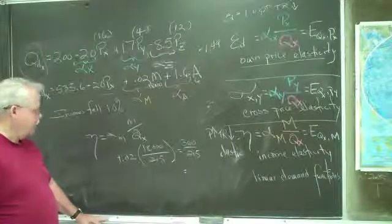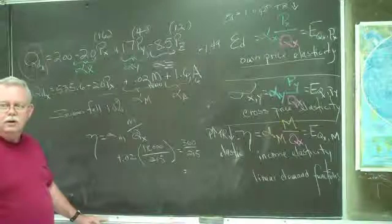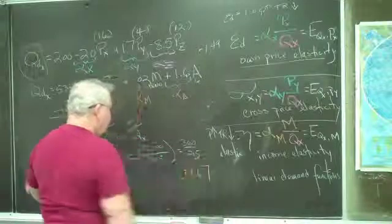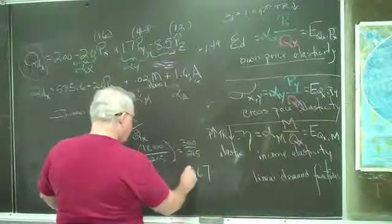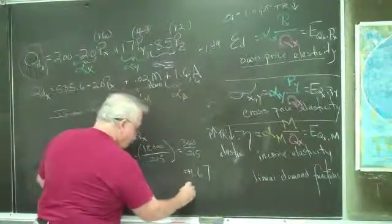I feel like we did that earlier. What's the answer? 1.67. 1.67. Positive or negative? Positive. Positive. It's a positive income elasticity. So it's a normal good.